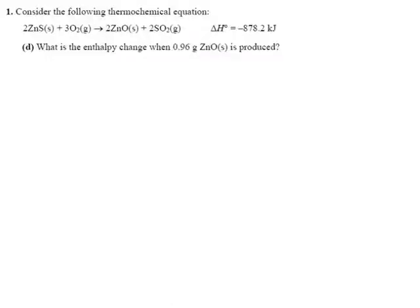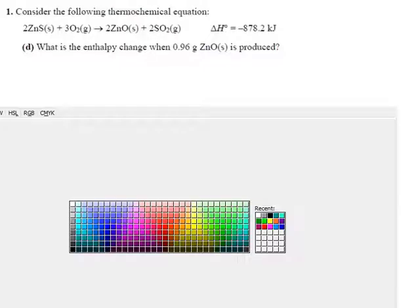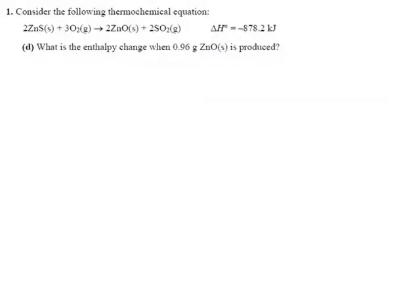The last piece of this example is still using the same reaction where we're roasting zinc sulfide, but now they've changed something on us. They're now talking about 0.96 grams of zinc oxide. The ratio is still the same - remember before we were doing 878.2 kilojoules for every two moles of zinc sulfide.